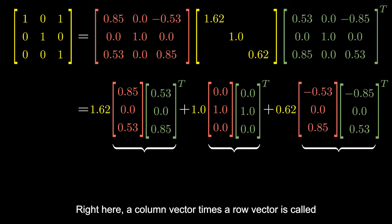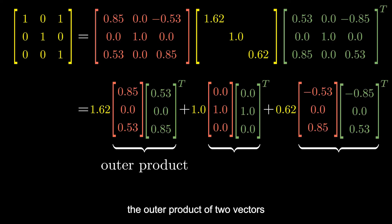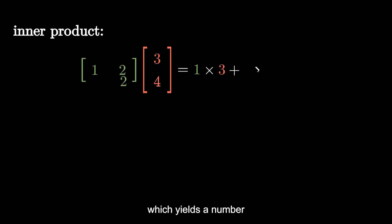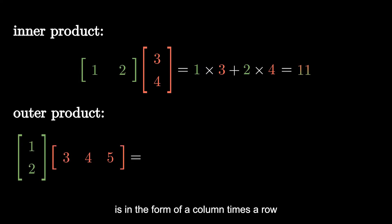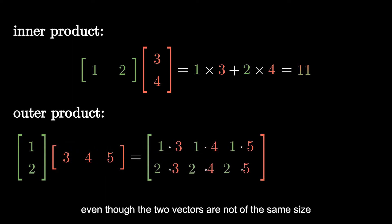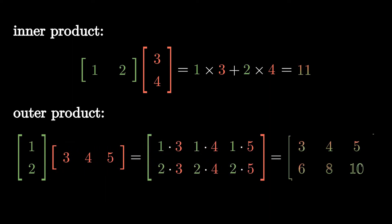Right here, a column vector times a row vector is called the outer product of two vectors. Recall that the inner product is in the form of a row times a column, which yields a number. While the outer product is in the form of a column times a row, resulting in a matrix, even though the two vectors are not of the same size. The result is always a rank-1 matrix.